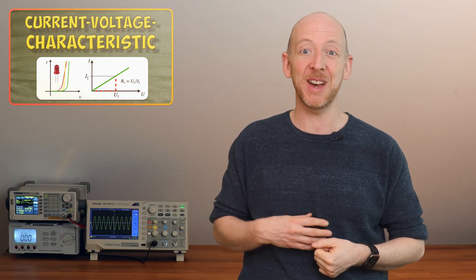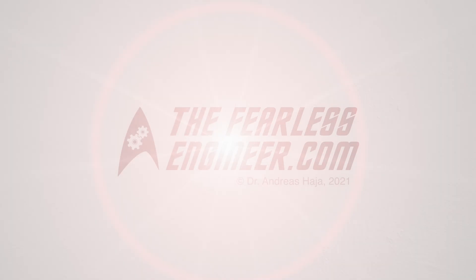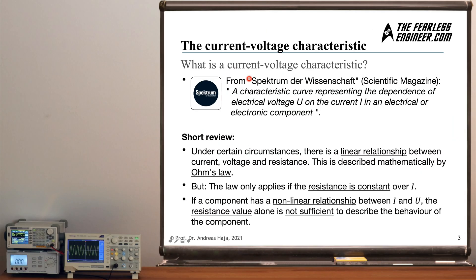My name is Andreas from the Fearless Engineer. Let's start with a brief definition of what is meant by a current voltage characteristic. Looking into a German scientific magazine called Spektrum der Wissenschaft, we find this definition: a current voltage characteristic is a curve which represents the dependence of electrical voltage on the current in an electrical or electronic component. To understand this, let's quickly recap some points from previous videos.